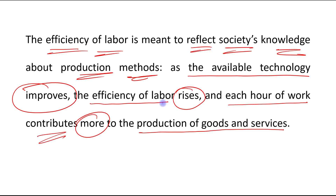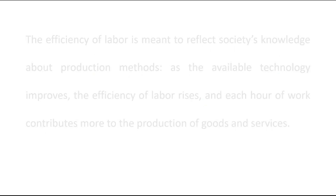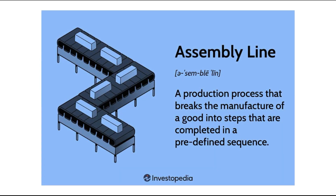The efficiency of labor increases because of technological progress, because of improvement in technology. For example, when in the early 20th century the assembly line production concept was introduced, it led to an increase in efficiency of labor.